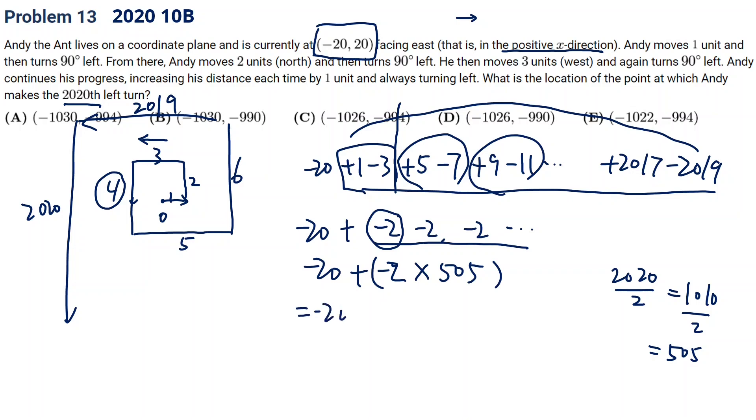Negative 20 plus this. So this is negative 20 minus 1,010. This is negative 1,030. This is horizontally.